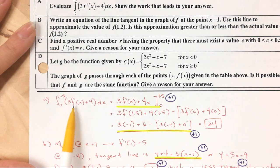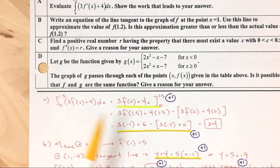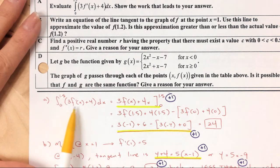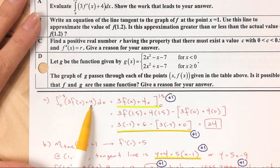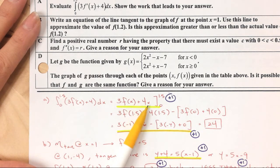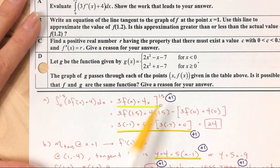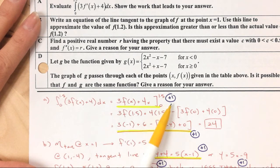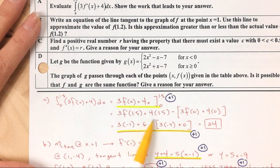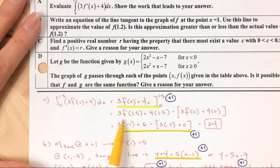So the antiderivative of 3f prime of x is 3f of x, and the antiderivative of 4 is 4x. Then we plug in 1.5 and plug in 0. So I get 3·f(1.5) + 4·(1.5), minus 3·f(0) + 4·(0).